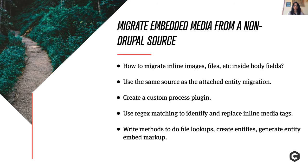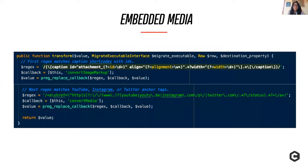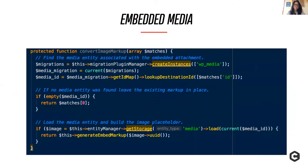Here's an example from an article migration YAML file where we take the body value of that article and pass it through some process plugins. The key one we want to look at is a custom process plugin we wrote called entity_embed. In the transform method there are two regular expressions looking for matches: in the first case we're looking for image shortcodes with IDs, and in the second case we're looking for social media embed tags.